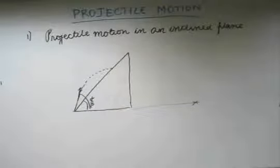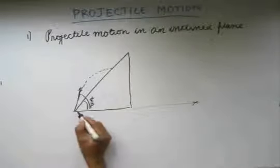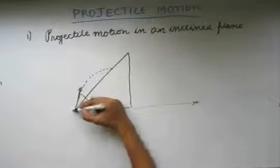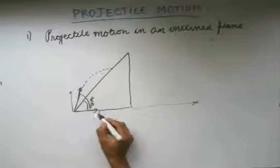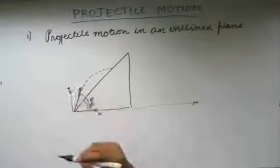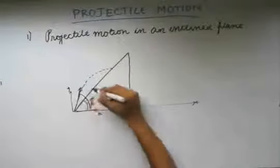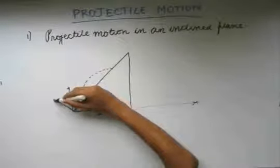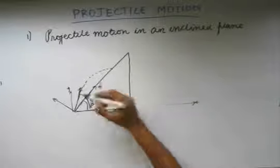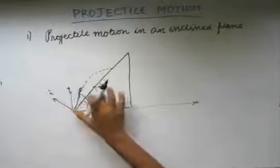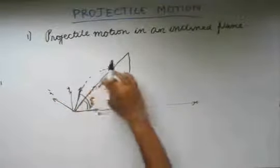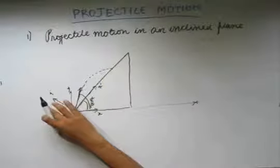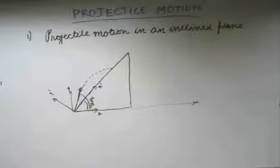To solve questions on projectile motion in an inclined plane, rather than taking the horizontal and vertical as two perpendicular axes, what we do is take two new axes as our reference. One axis, x', is taken along the incline, and the other axis, y', is taken perpendicular to the incline.